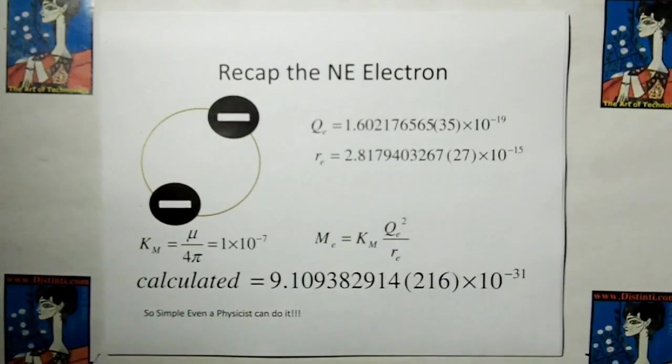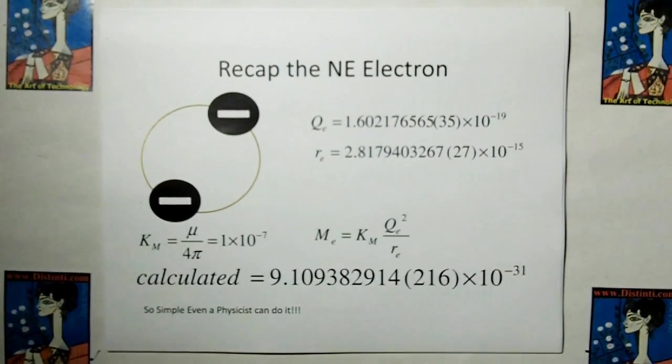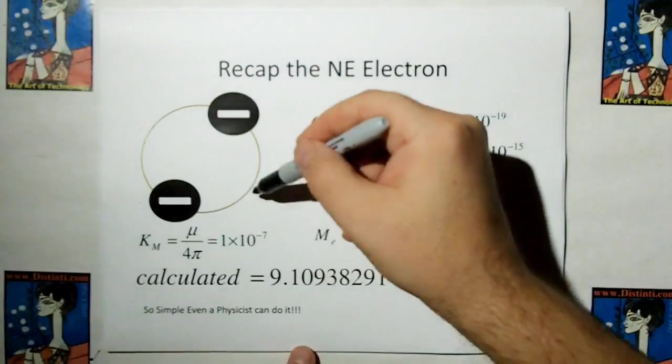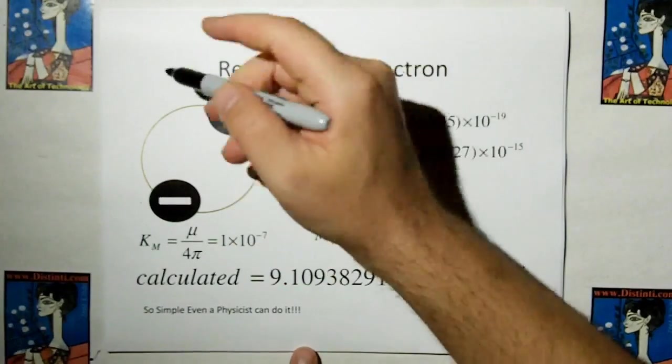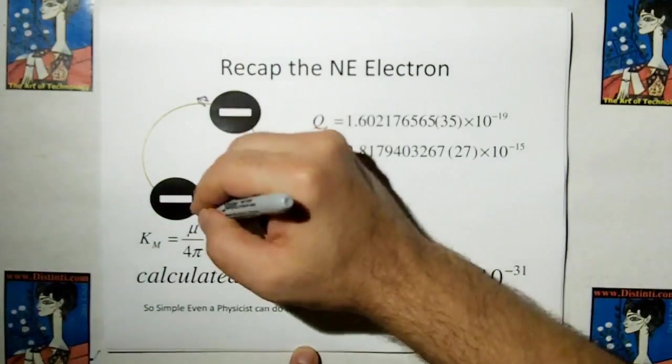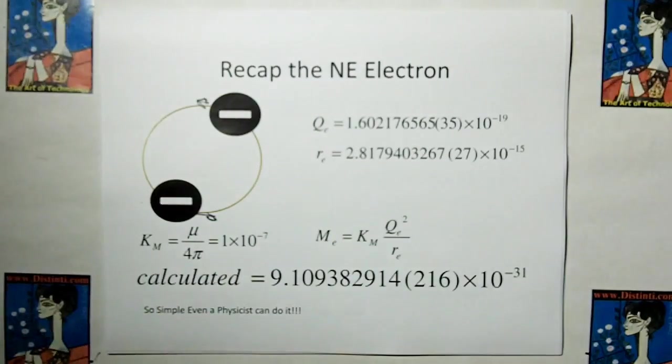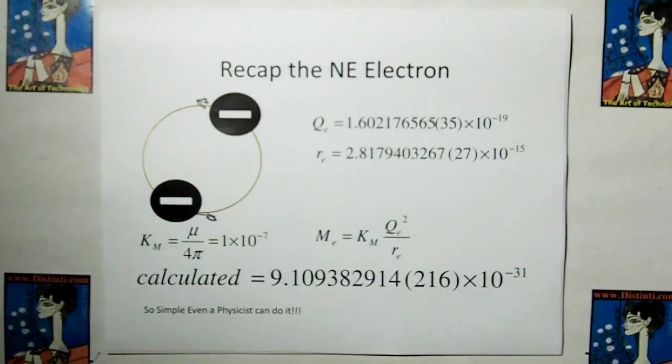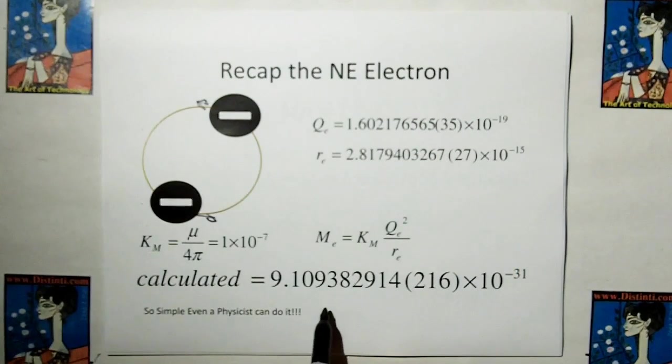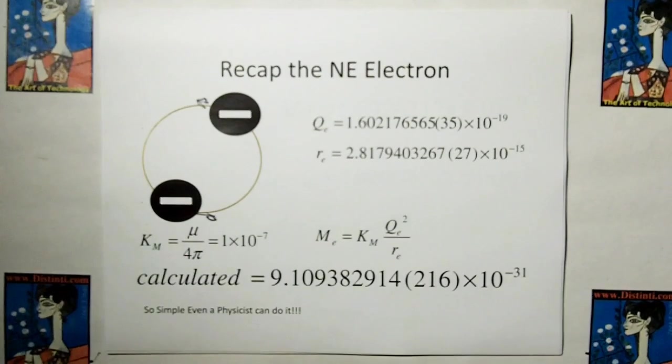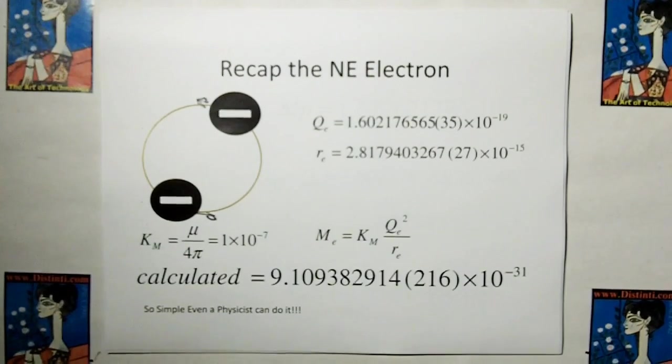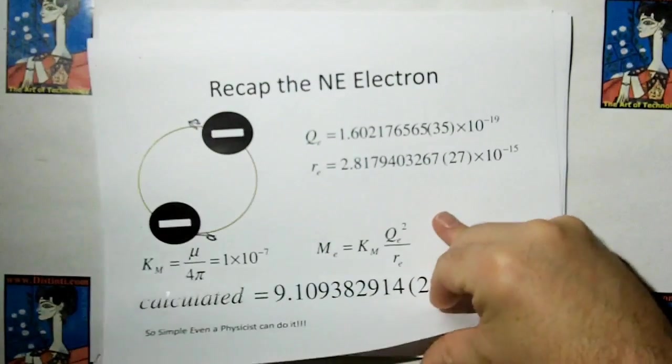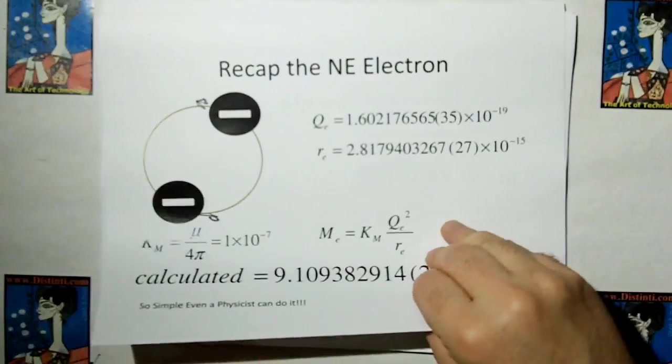So let's recap the new electromagnetism electron. As you remember, we had two negative charges in orbit about a central point and they orbited at the speed of light. By plugging into this simple equation, we could calculate the inertia or what we say mass of the electron which is 9.109 times 10 to the minus 31 kilograms. It was so simple, even a physicist can do it.